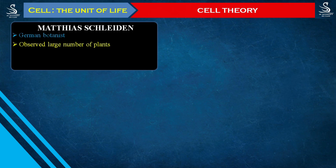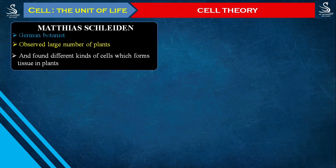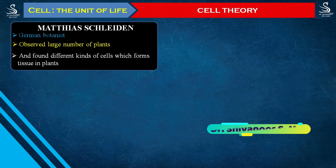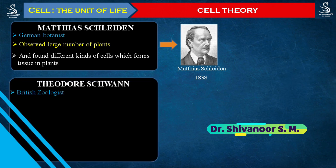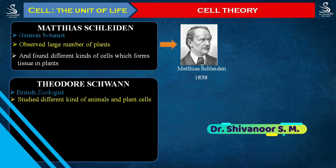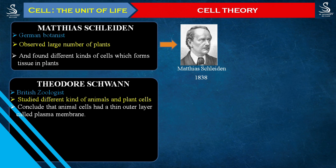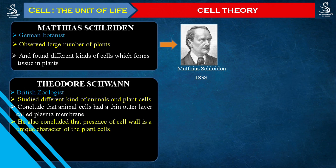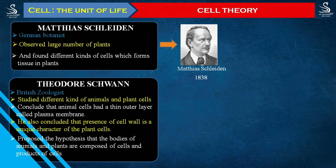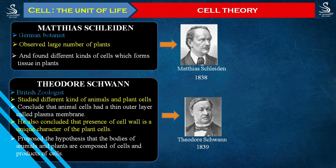So, both scientists: Schleiden was a German botanist who observed a large number of plants and concluded that different kinds of cells form tissues in plants. Then Schwann, a British scientist, studied different kinds of animals and plant cells, concluded that animal cells have a thin outer layer called the plasma membrane, that the presence of the cell wall is a unique characteristic of all plant cells, and put forward the hypothesis that all plants and animals are made by cells and the products of cells.